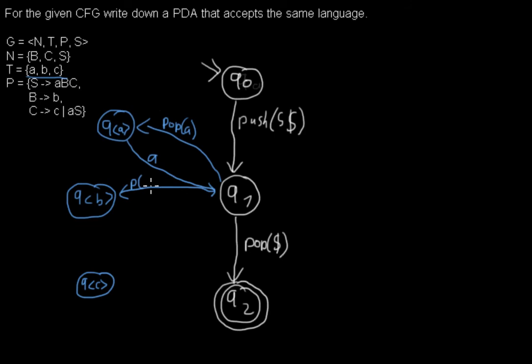So for the B state we have to pop a B from the stack and read a B from the input string, and for the C the same. Pop a C from the stack and we read a C from the input string.